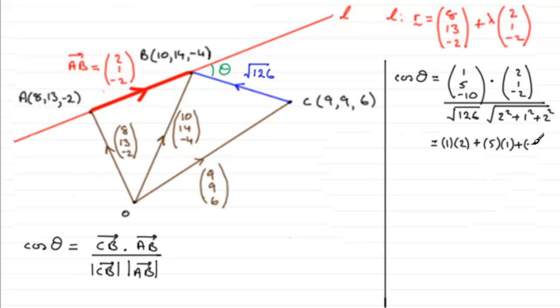And then add minus 10 times minus 2. So we've got minus 10 times minus 2. Just try and squeeze that in there, I hope you can see that.